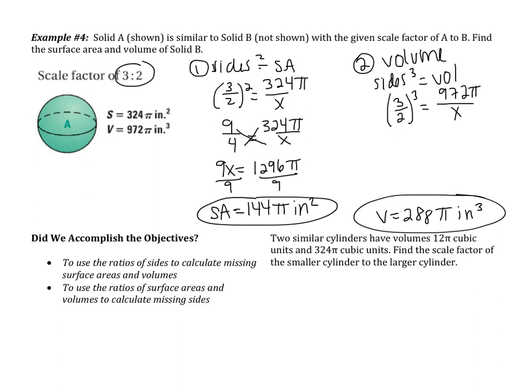Did we accomplish the objectives? First, we used a scale factor to calculate surface areas and volumes — that's what we did in example 4. Then we used ratios of surface areas and volumes to calculate missing sides — that was example 2, where you go backward to find the sides. You have one last problem to do on your own, and when you come to class tomorrow, I will be checking to make sure that you have it completed. Good luck!